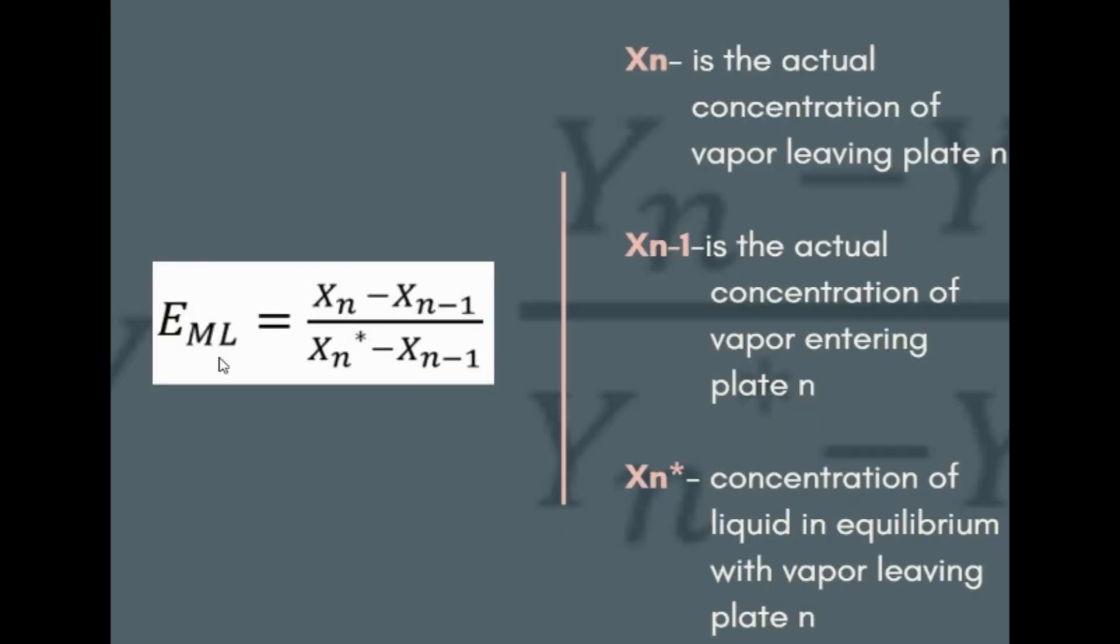Murphree efficiency based on liquid is equal to Xn minus Xn minus 1 over Xn asterisk minus Xn minus 1, where Xn is the actual concentration of vapor leaving plate N, Xn minus 1 is the actual concentration of vapor entering plate N, and Xn asterisk is the concentration of liquid in equilibrium with vapor leaving plate N.